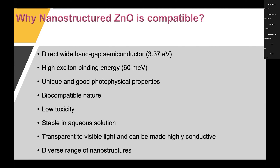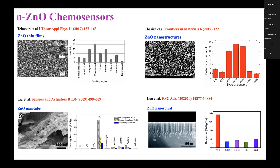To overcome these limitations, I have used zinc oxide. Nanostructured zinc oxide is compatible for chemo sensors because zinc oxide is a direct wide band gap semiconductor at 3.37 eV, has high excitonic binding energy of 60 meV, unique and good photophysical properties, is biocompatible, has low toxicity, is stable in aqueous solution, transparent to visible light, can be made highly conductive, and offers a diverse range of nanostructures for making chemo sensors.